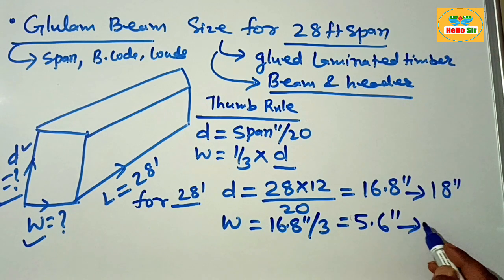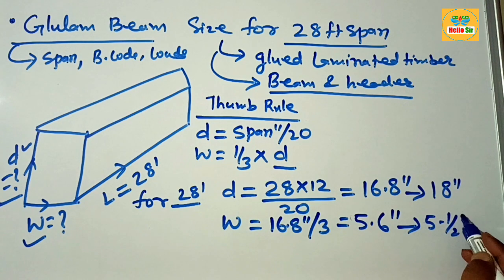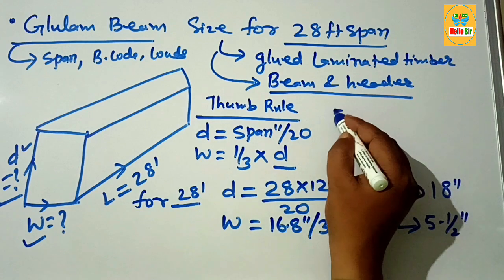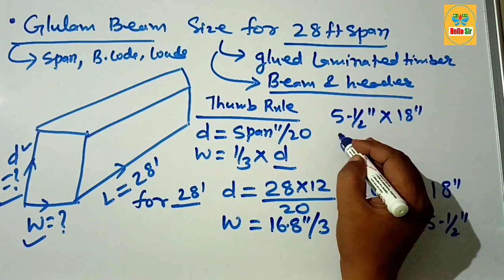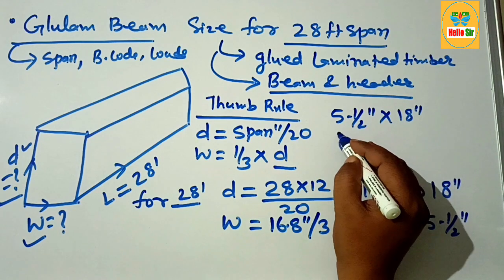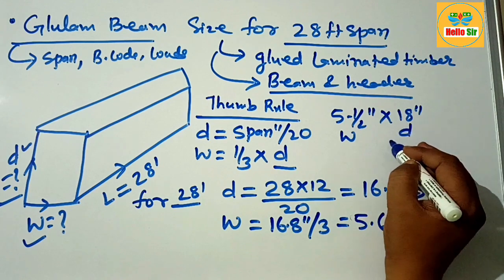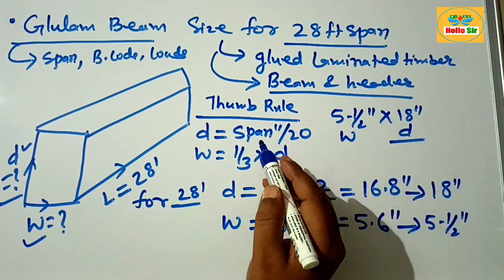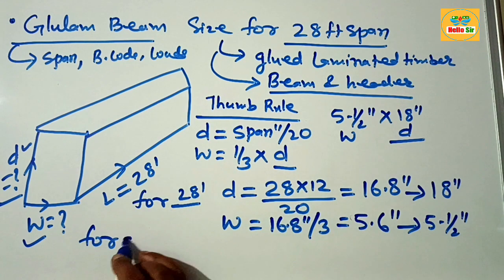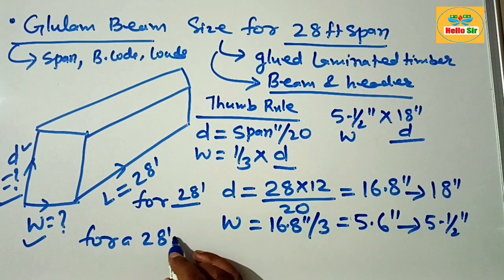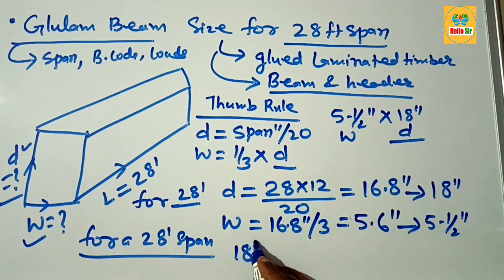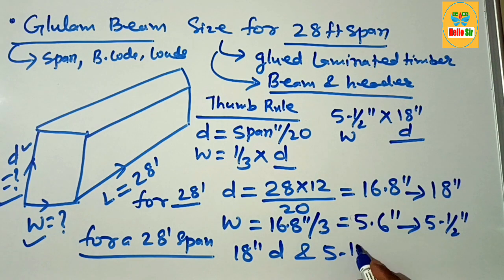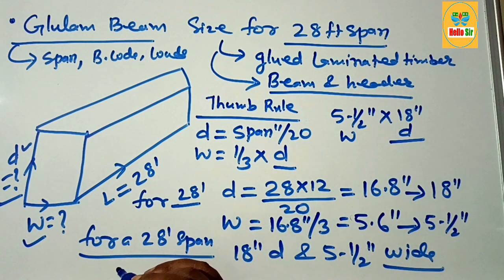The nominal depth section of the beam is 18 inches, and the nominal width section is 5 and a half inches. So for a 28-foot span, the correct glulam beam size should be 18 inches deep and 5 and a half inches wide. Thank you.